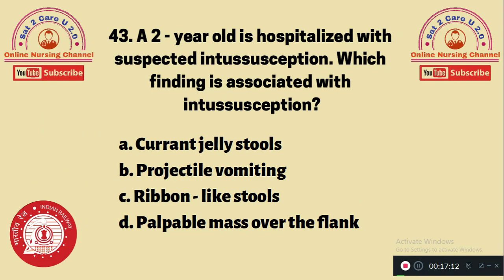Question 43: For a two-year-old hospitalized with suspected intussusception, which finding is associated with intussusception? A. Currant jelly stool, B. Projectile vomiting, C. Ribbon-like stool, D. Palpable mass over the flank. Currant jelly stool is the classic sign and symptom of intussusception. The answer is A.